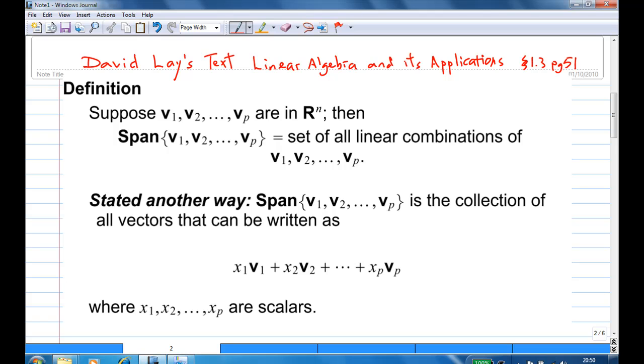In the definition, it says that the span of V1, V2 to Vp is the set of all linear combinations of V1, V2 to Vp. Stated another way, it's actually a collection of all x1·V1 plus x2·V2 all the way to xp·Vp, where x1 and x2 to xp are scalars.